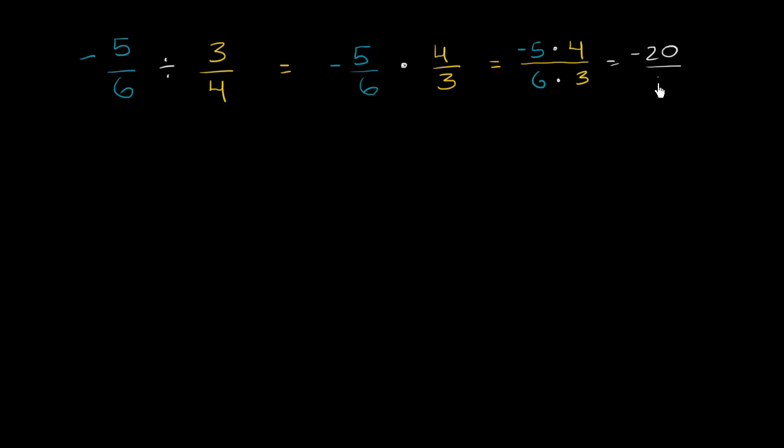And the denominator here is 18. So we get negative 20 over 18. But we can simplify this. Both the numerator and the denominator, they're both divisible by 2. So let's divide them both by 2.